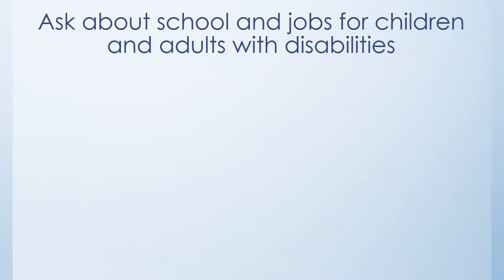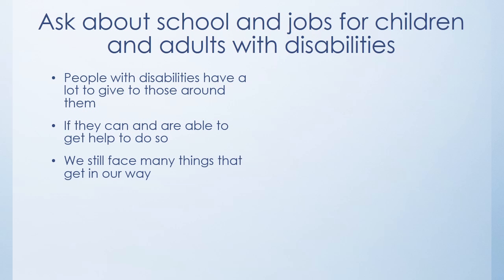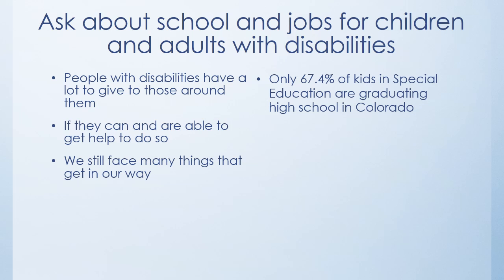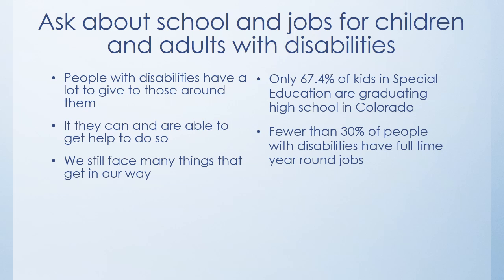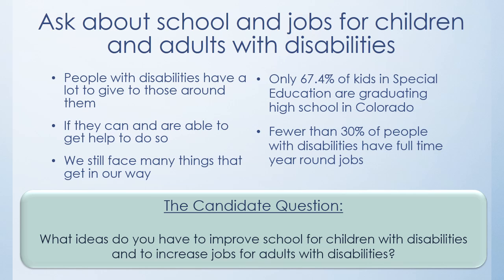Ask about school and jobs for children and adults with disabilities. People with disabilities have a lot to give to those around them, if they can and are able to get help to do so — but we still face many things that get in our way. Only 67.4% of kids in special education are graduating high school in Colorado. Fewer than 30% of people with disabilities have full-time, year-round jobs. Candidate question: What ideas do you have to improve school for children with disabilities and to increase jobs for adults with disabilities?